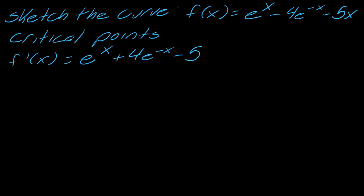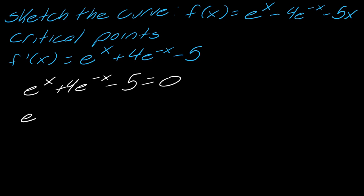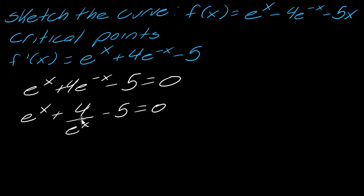Now we can talk about critical points. We already found our first derivative, so how do I find the critical points? This is going to require thinking a little more creatively — I want to set this equal to zero. You're probably looking at this saying you have no idea how to solve it. You just have to start playing around and thinking about how this negative exponent actually creates a fraction. So this is going to be e to the x plus 4 over e to the x minus 5.